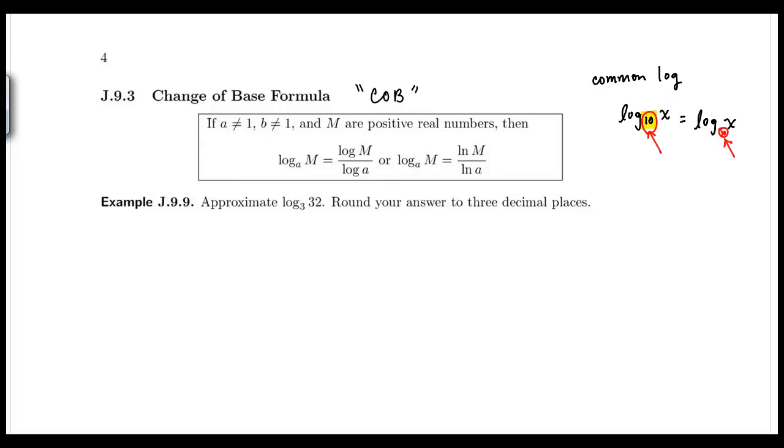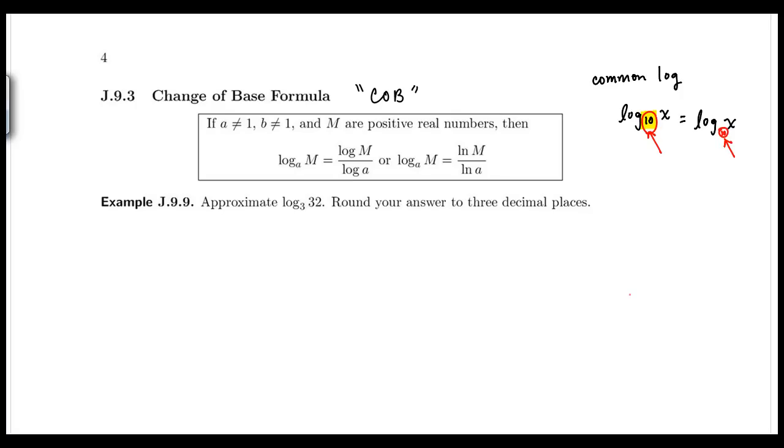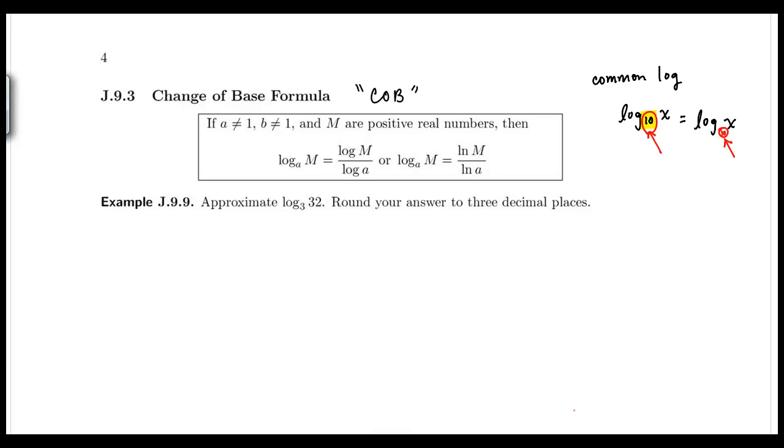So the change of base formula was created so that we could put these values of logs into the calculators and change them into the base 10 or natural log because those are the two logs in our calculator. This log is a base 10. Notice there's no base there, so it's a base 10 and natural log. And that's all they're made for. They're just made for the calculator. They said if you have some log like in our first example base 3, we can't put that in our calculator. We just have a log of base 10 or a natural log.